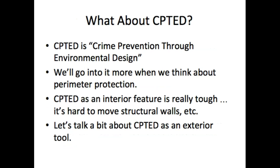One concept that's not so basic is CPTED — Crime Prevention Through Environmental Design. This is used when doing physical security, normally for a new building, though you can do some retrofitting. When we talk about perimeter protection in the coming weeks, we'll discuss CPTED a lot. It's not something you generally use inside — it's the physical environment normally at the exterior of the building. There are things you can do with the outside of a building that become security features that no one would think are security features.